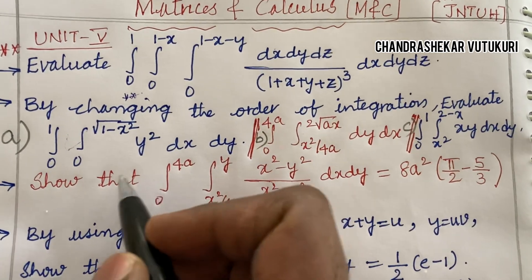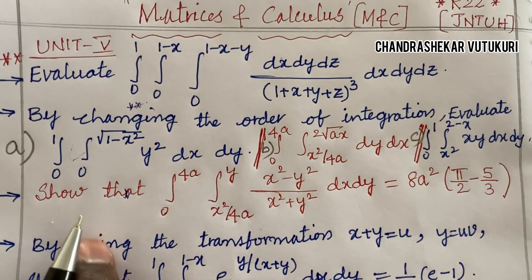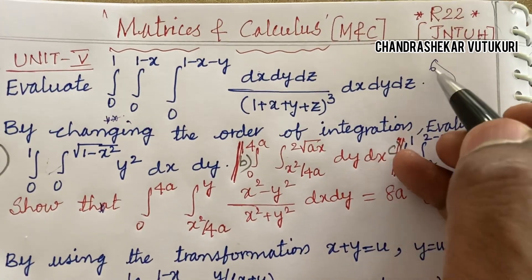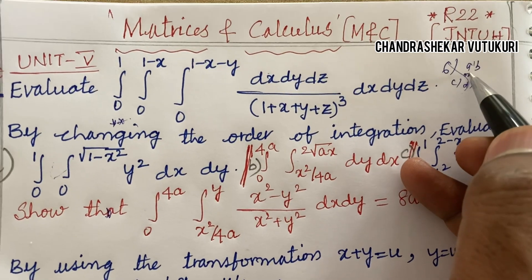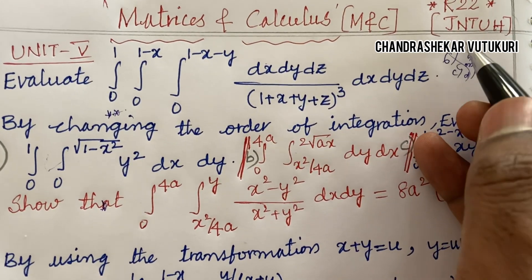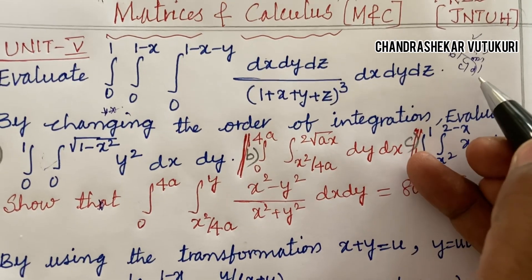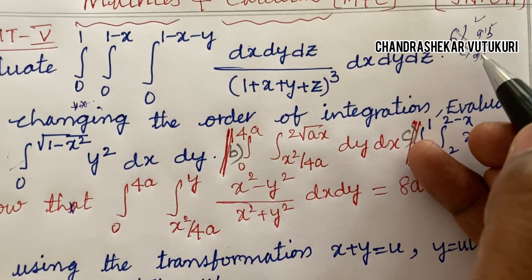Such type of question is also a sure question, dear students, and this is the last question. I mean the sixth question in the question paper A or B or C or D.